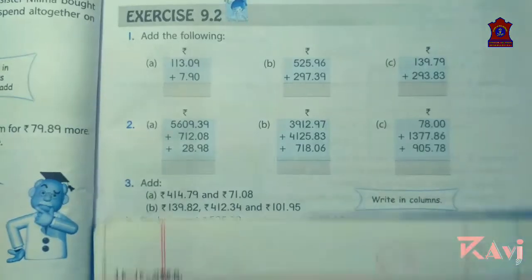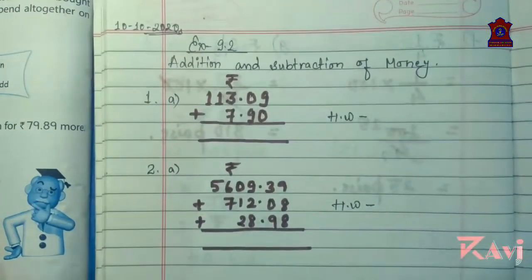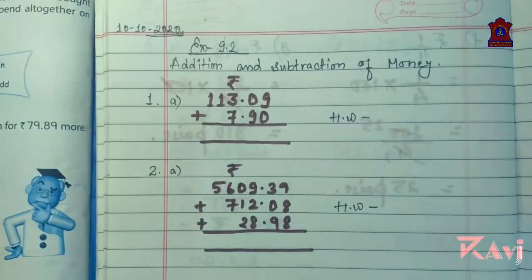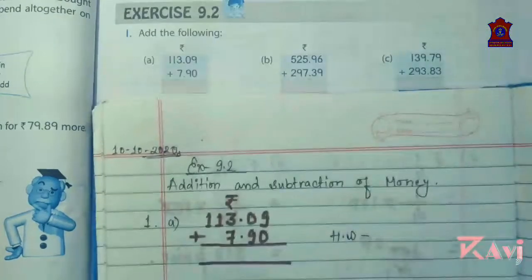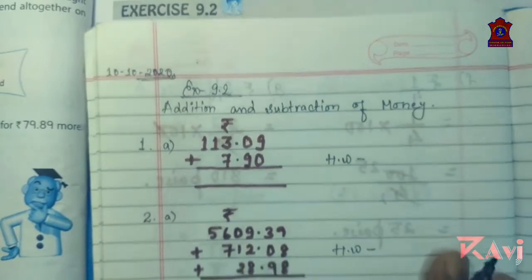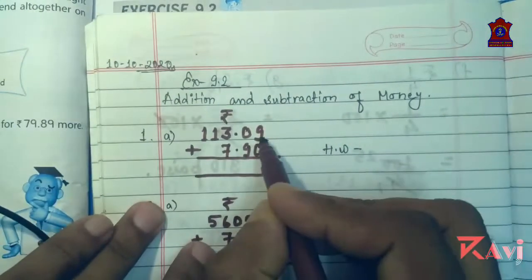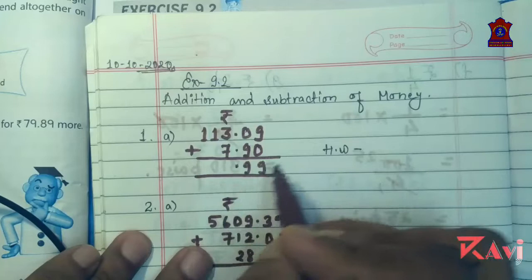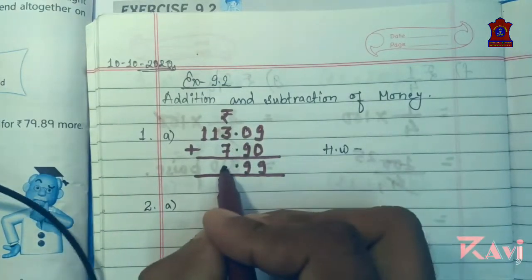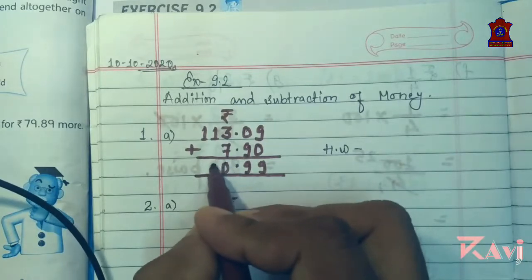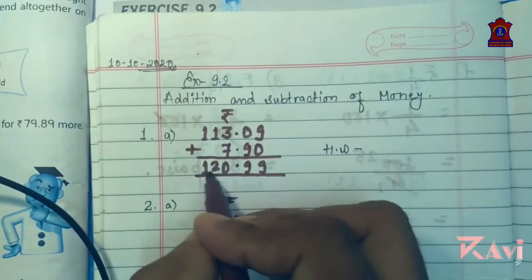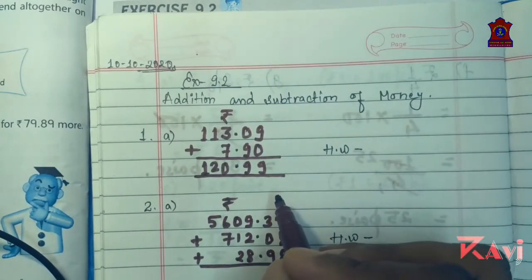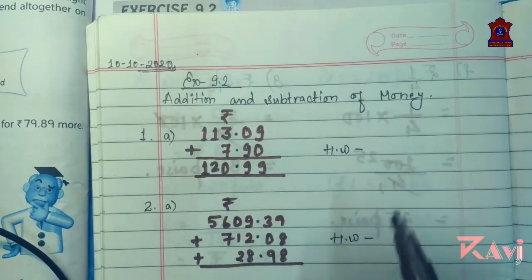I have already added the following — question number one. Simple addition: 9 plus 0 is 9, 0 plus 9 is 9. Decimal: 7 plus 3 is 10, 1 goes here, 1 plus 1 is 2, and 1. So the answer is rupees 120.99.